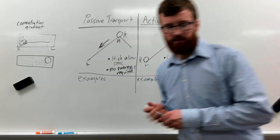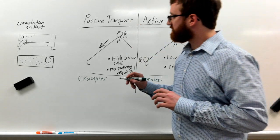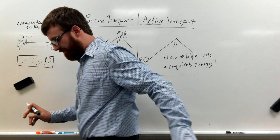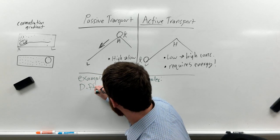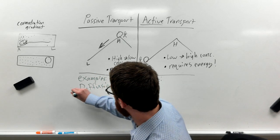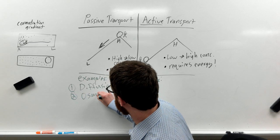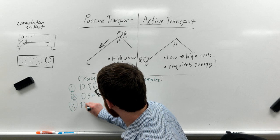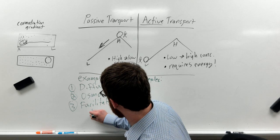Now, the types of passive and active transport. So with passive transport, I'm actually going to sit down for this part of it. For passive transport, we have simple diffusion, osmosis, and three, facilitated diffusion.